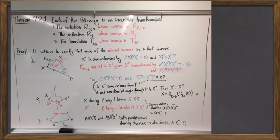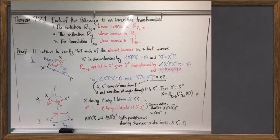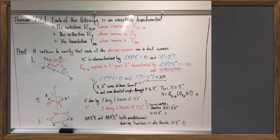We saw four different results. The first guarantees that these three types of transformations are invertible. So if I rotate the whole plane about a rotocenter P by an angle of theta, we can undo that — we can invert it by re-rotating by the opposite of that angle, just by rotating back in the other direction.